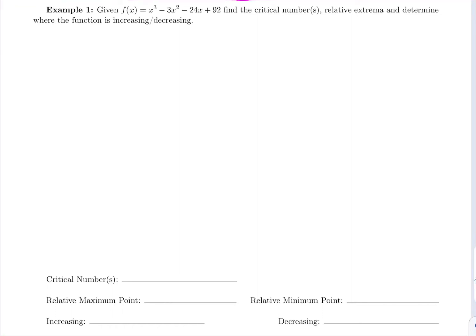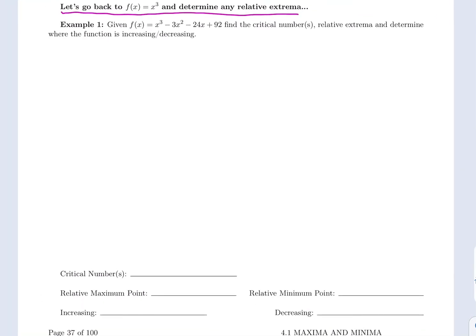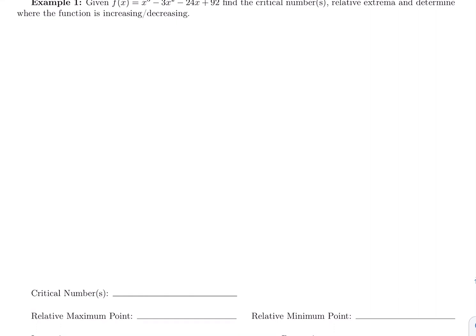Let's find some relative extrema and intervals of increasing and decreasing for this function: f of x is x cubed minus 3x squared minus 24x plus 92. Whether you're just asked for increasing and decreasing or just asked for relative extrema, it's the same exact two steps for both. Our first step is going to be to find any critical numbers by setting the derivative equal to 0.